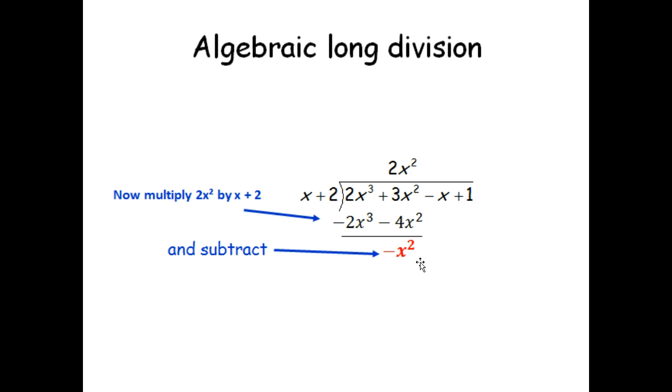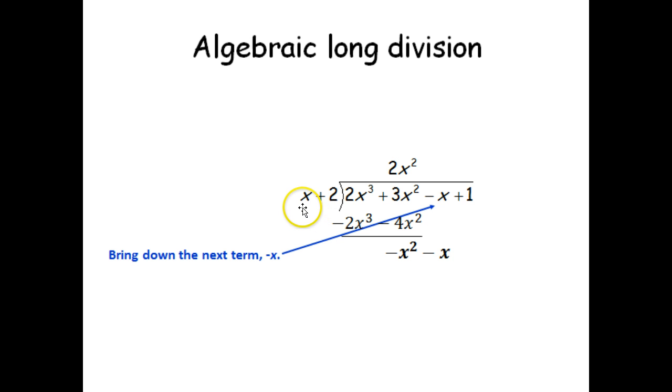Now we're going to basically start from where we were now, except now we're going to bring down our negative x. Now that we've got this here, we have to say, what do I have to multiply x by to give me negative x squared? x to turn into negative x squared would have to be a negative x. So I'm going to write that right up top right here.